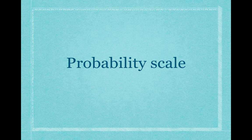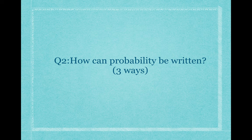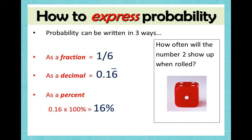Next one: how can probability be written? There are three ways to show a probability. As a fraction — one over six, so if you're trying to get a two on a dice you write it as one over six. As a decimal — 0.16. Or as a percent — 16%. So there are three different ways to express probability.